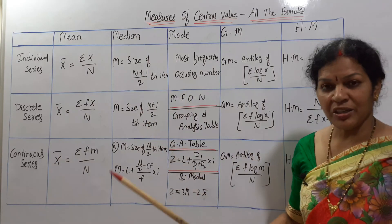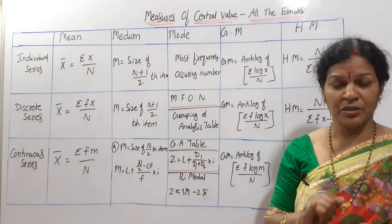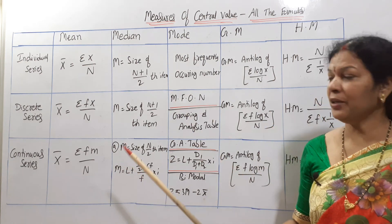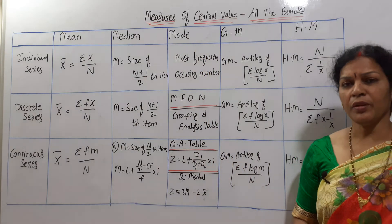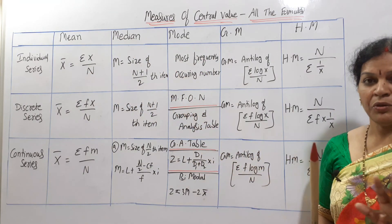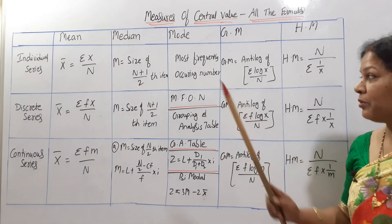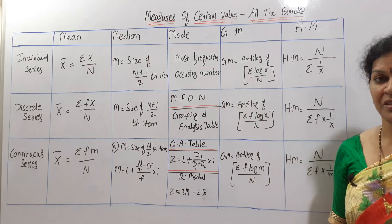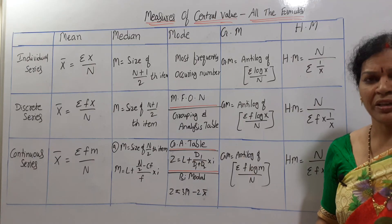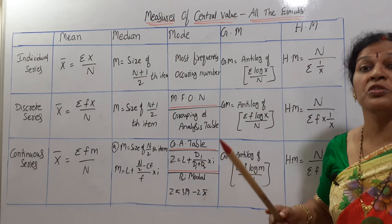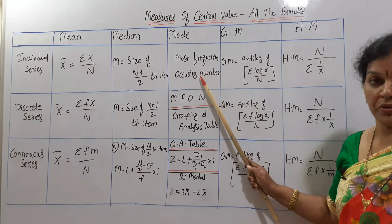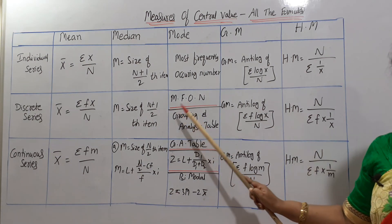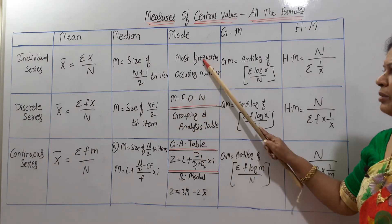If you understand median, you can extend to quartiles, deciles, and percentiles in the same fashion. Now, for mode: in individual series there is no formula — simply identify the most frequently occurring number. The number that repeats most often is the mode. In discrete series, the same approach applies.